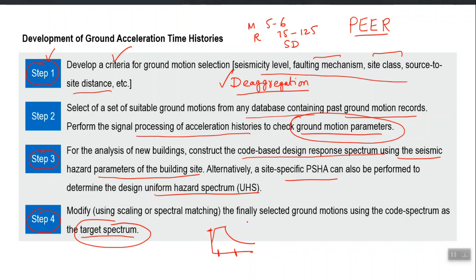The ground motions you finally selected will have a different spectrum which will not be matching with the target spectrum. This means they are not yet ready to be used for dynamic analysis because they are representing a different hazard level. Their amplitude should be increased or decreased so that they match with the hazard level of your site. This process is called modification of ground motions.